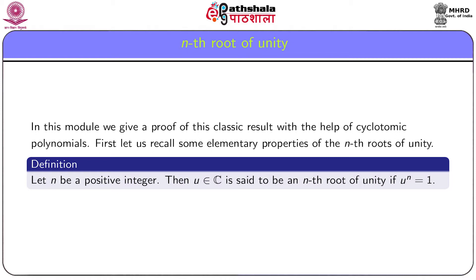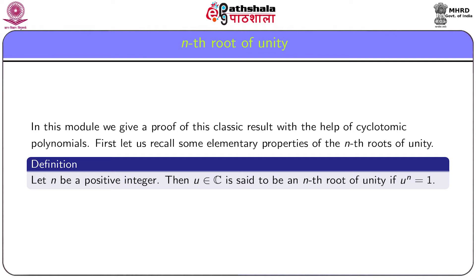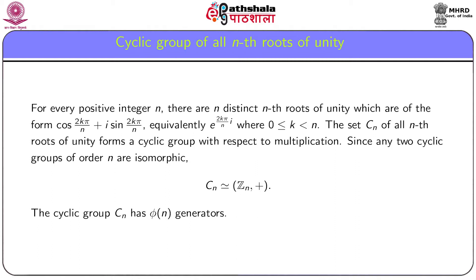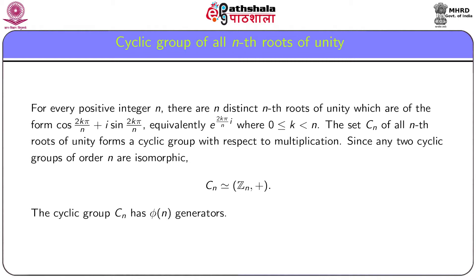Here we prove this Wedderburn theorem with the help of cyclotomic polynomials. First, let us recall some elementary properties of the nth roots of unity. If n is a positive integer, then a complex number u is said to be an nth root of unity if u to the power n is equal to 1. For every positive integer n, there are n distinct nth roots of unity which are of the form cos(2kπ/n) + i·sin(2kπ/n), equivalently e^(2kπi/n), where k varies from 0 to n minus 1.